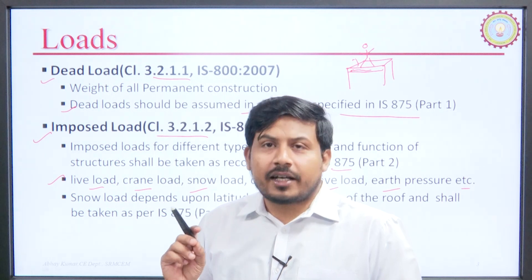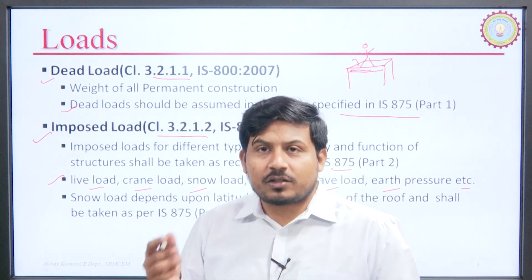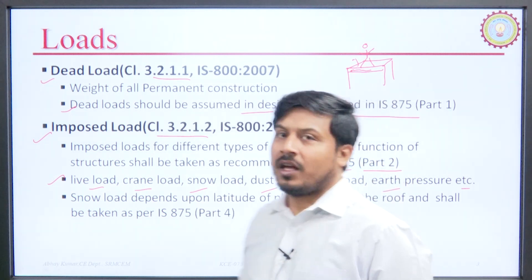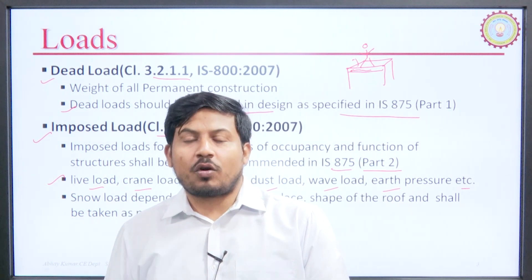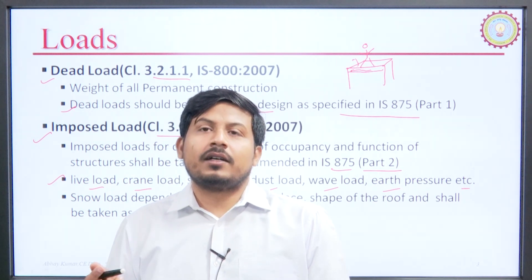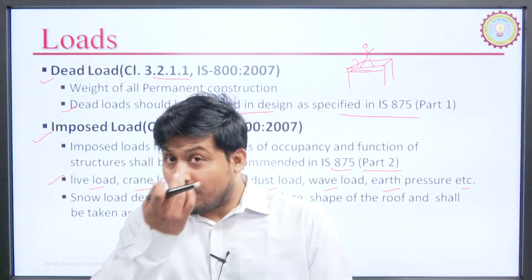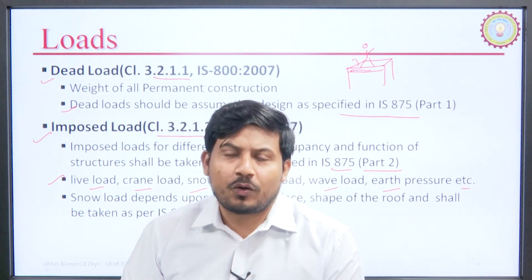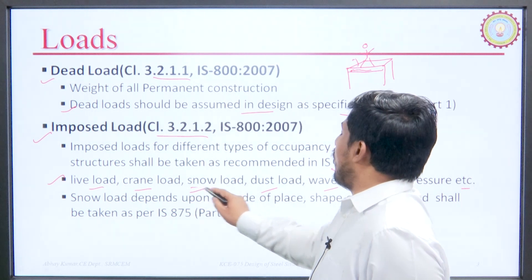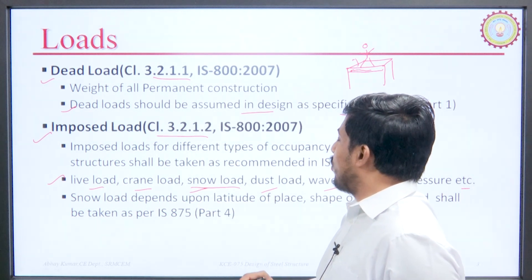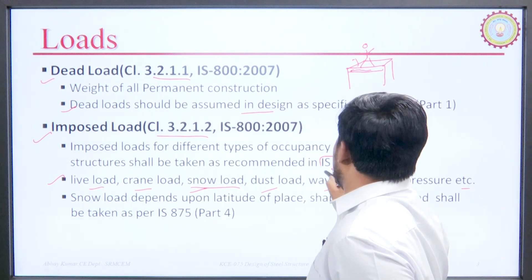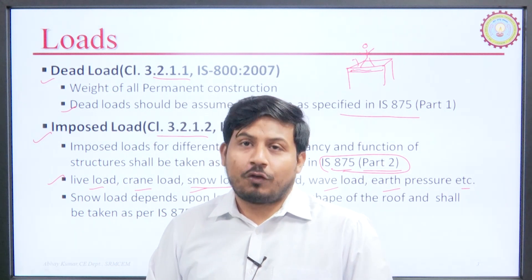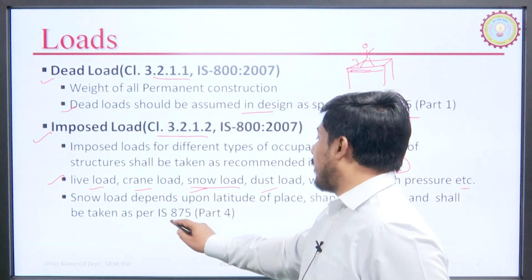Just as there is a dedicated code for dead load, there is also a dedicated code for imposed load — IS 875 Part 2. IS 875 Part 1 covers dead load and Part 2 covers the various kinds of imposed loads. Although imposed load contains snow load, snow load has its own dedicated part — IS 875 Part 4.